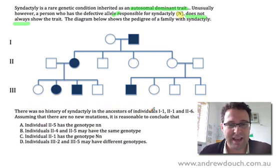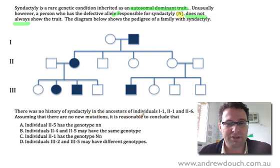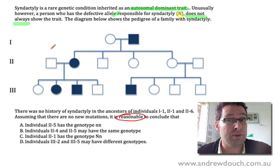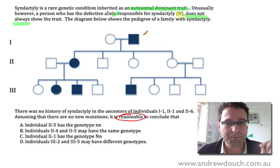It says there was no history of syndactyly in the ancestors of individuals 1-1, 2-1 and 2-6. Assuming that there were no new mutations, it's reasonable to conclude what? And firstly, I'd like to just point out, we're saying it's reasonable. So we're asked what here is reasonable, not necessarily can we prove it, but just is it reasonable? Now, first of all, they've told us there was no history of syndactyly in the ancestors of individuals 1-1, 2-1 and 2-6.